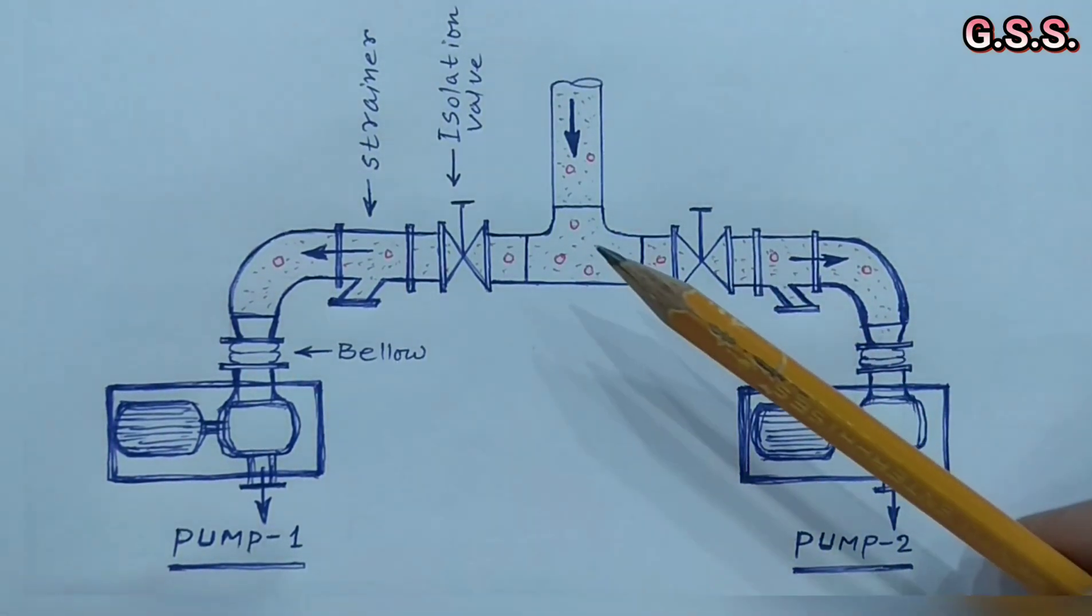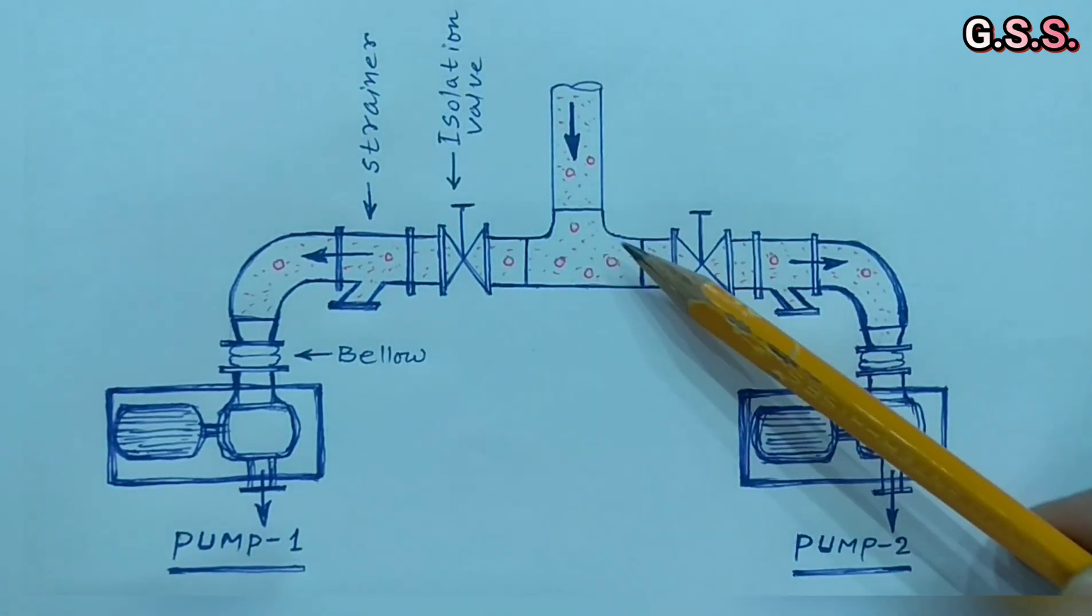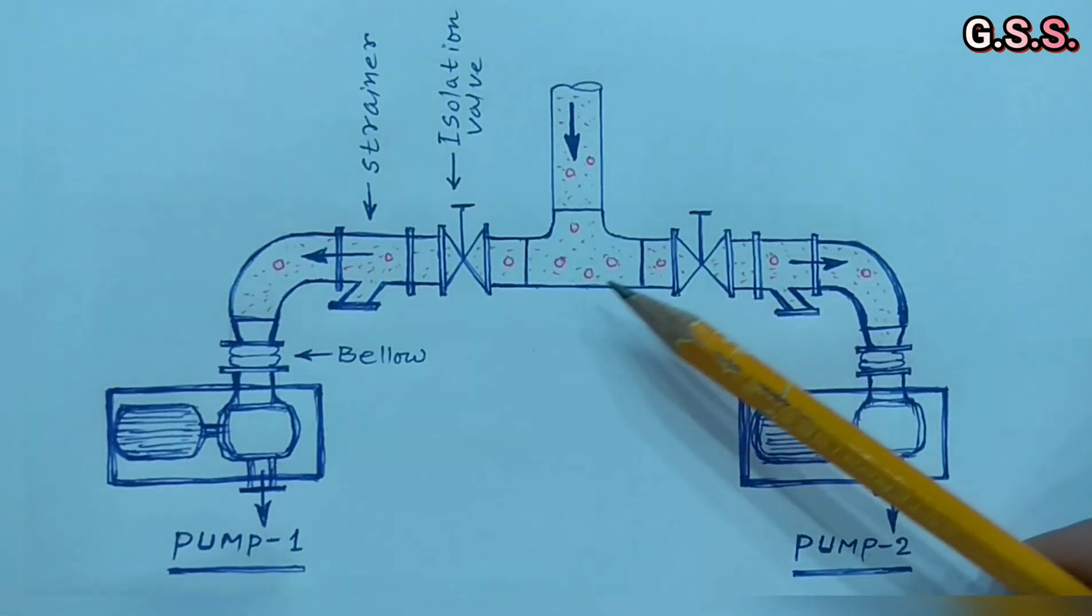To improve this situation, we can replace this straight T by two elbows so that liquid will not directly hit on the T.